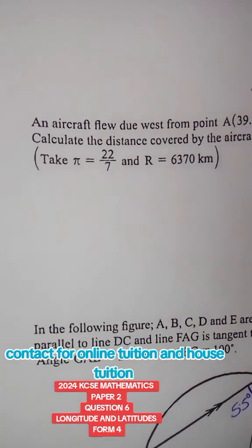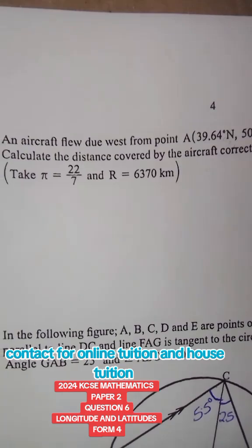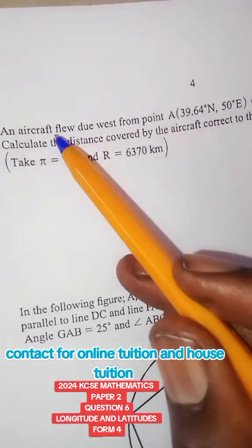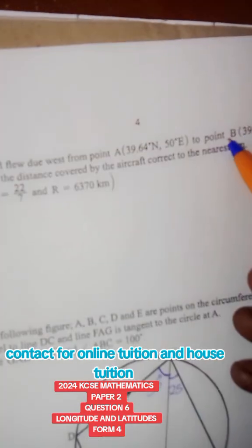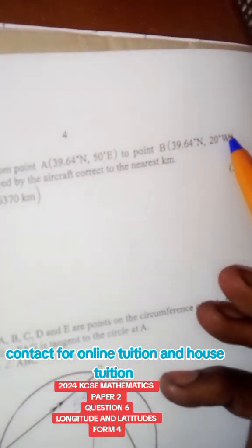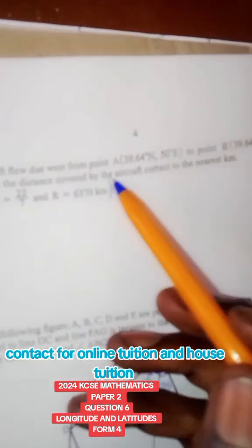Hello friends, this is question 6, KCSE 2024 Paper 2. An aircraft flies due west from point A at given coordinates to point B at given coordinates. Calculate the distance covered by the aircraft to the nearest kilometer.